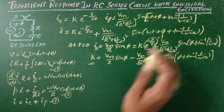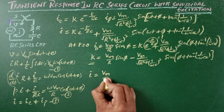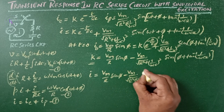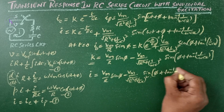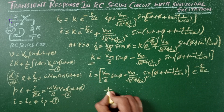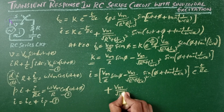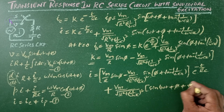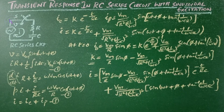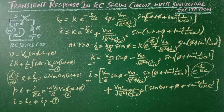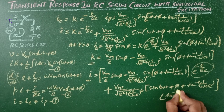Substituting the value of K, the net current I is given by: [Vm/R · sin(φ) minus Vm/√(R² + 1/(ωC)²) · sin(φ + tan⁻¹(1/(ωCR)))] · e^(−t/RC) plus Vm/√(R² + 1/(ωC)²) · sin(ωt + φ + tan⁻¹(1/(ωCR))). This is the final solution. The first term is the transient component with decay factor e^(−t/RC), and the second term is the steady-state current which leads the applied voltage by angle tan⁻¹(1/(ωCR)).